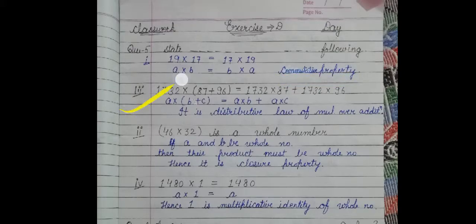Next, this is the example of distributive property. In this property A multiply bracket B plus C is equal to A multiply B plus A into C. This is distributive law of multiplication over addition.